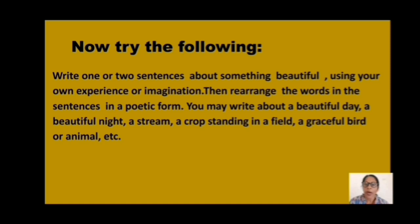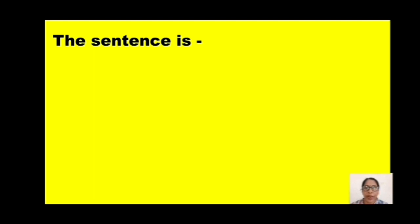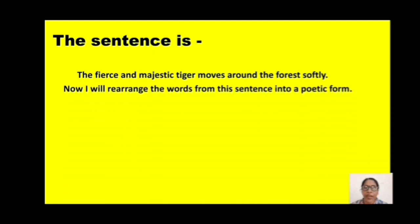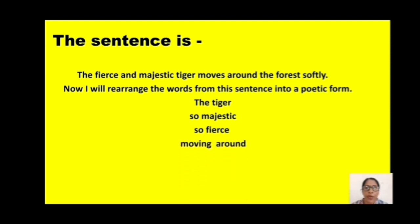You may write about a beautiful day, a beautiful night, a stream, a crop standing in a field, a graceful bird or animal, etc. Let me give you an example. The sentence is: The fierce and majestic tiger moves around the forest softly. Now I will rearrange the words from this sentence into a poetic form: The tiger, so majestic, so fierce, moving around, gently without sound, in the lush green forest ground. Is it clear, children? This activity is for your homework.